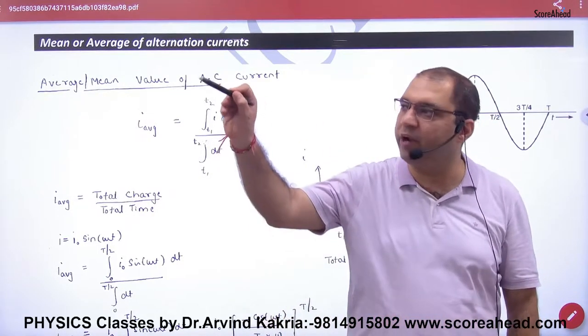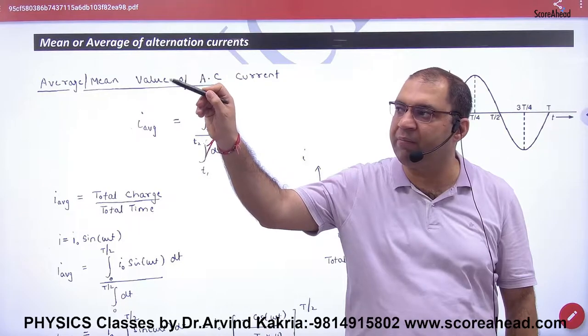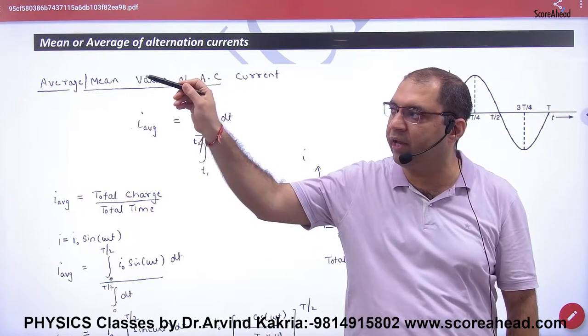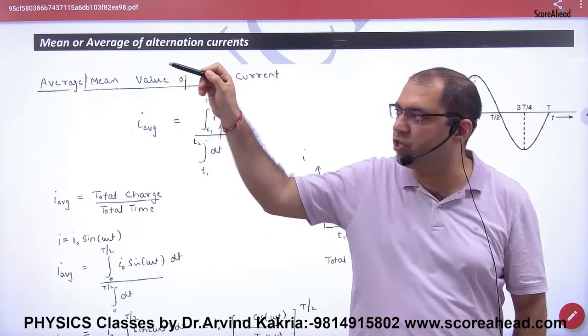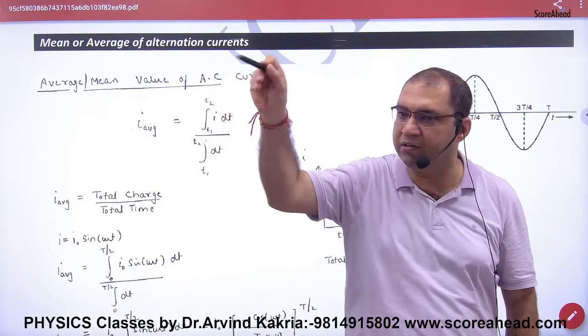So you see, 0.1 ampere, 0.2 ampere, 1 ampere, 2 ampere, 3 ampere, 2 ampere, 1 ampere, 0 ampere. Then the direction will change. 1, 2, 3, 2, 1, 0. Then the direction will change.